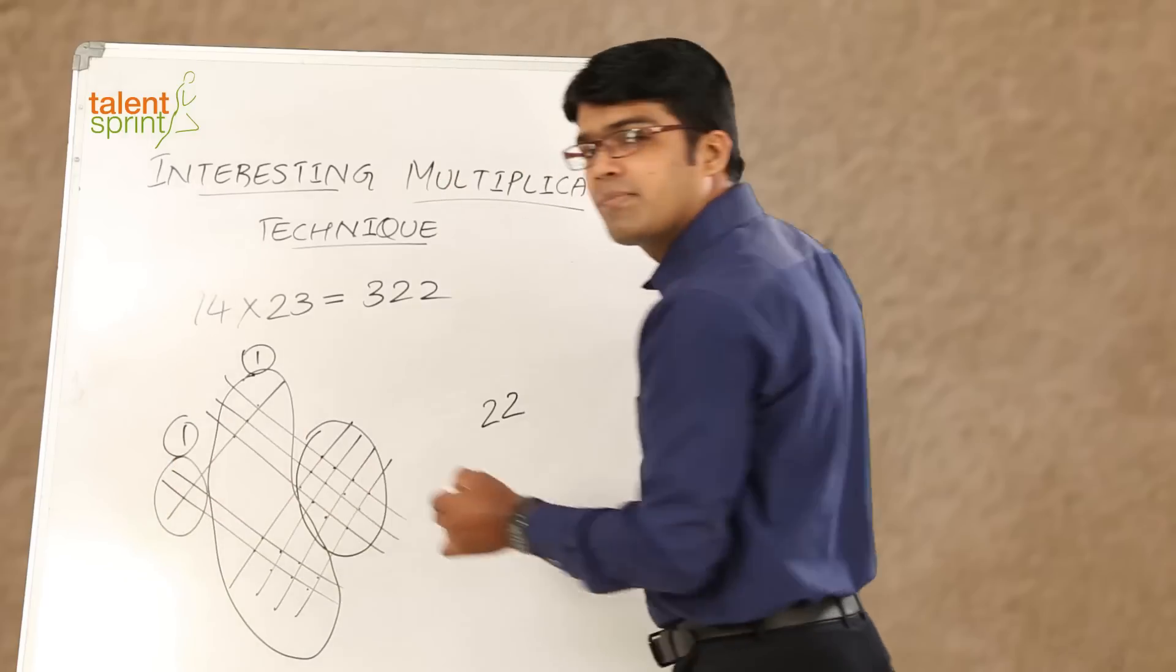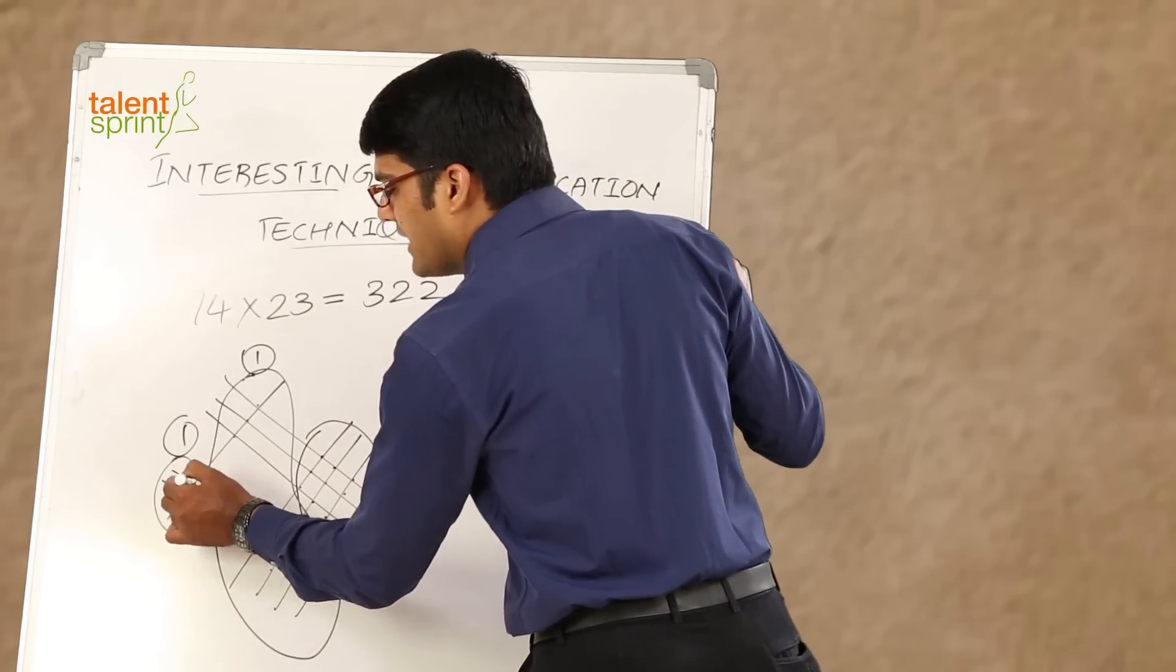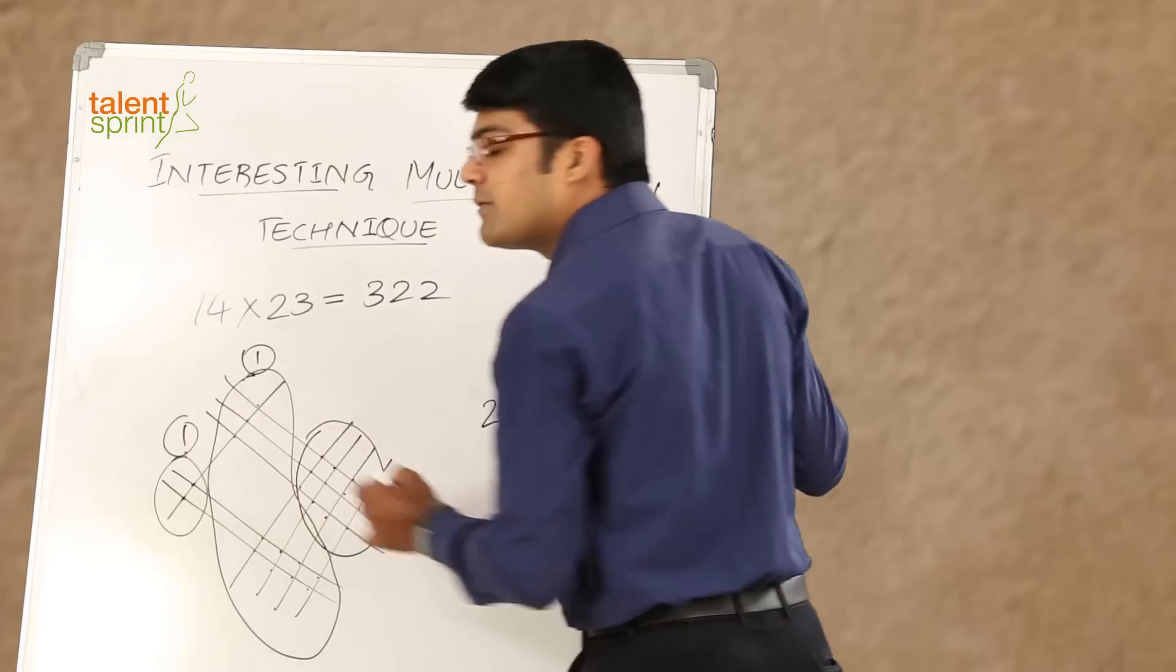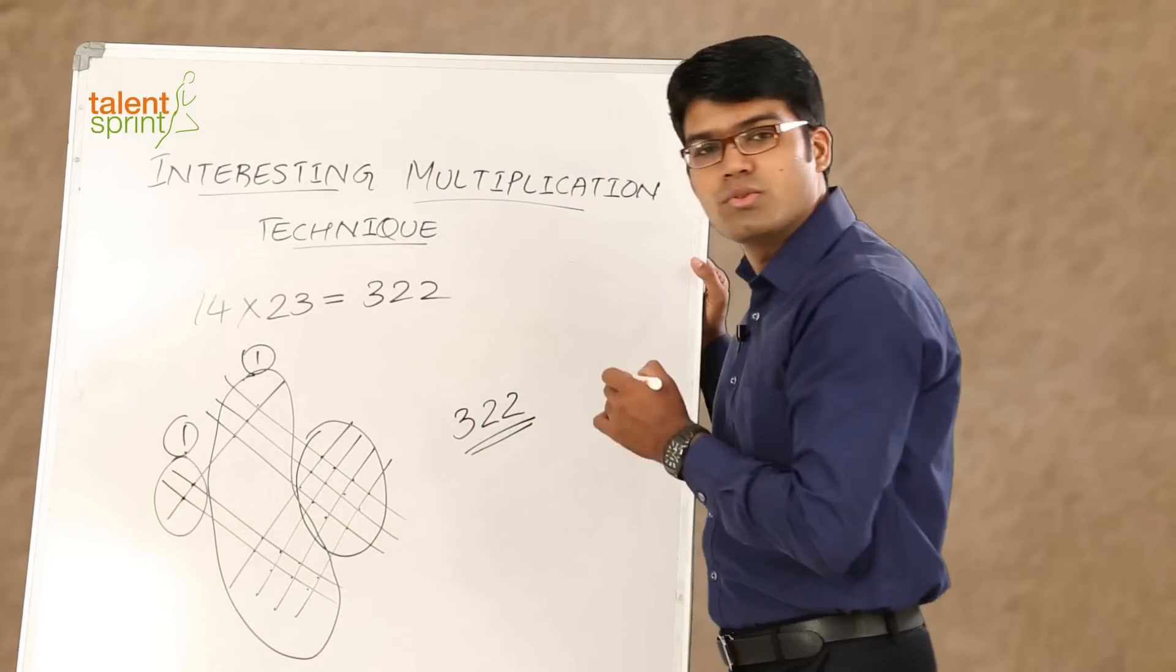And finally count the number of points of intersection for the hundreds place. So 1 and 2, but we have 1 carried forward. So 2 plus 1 gives you 3. 322, and that is what we had got in the earlier case. So this is how you can multiply numbers using this very interesting multiplication technique.